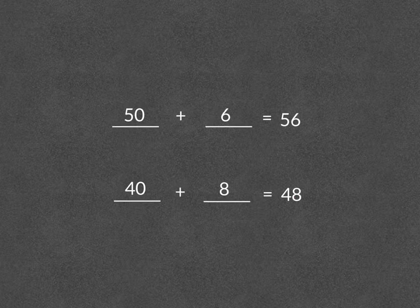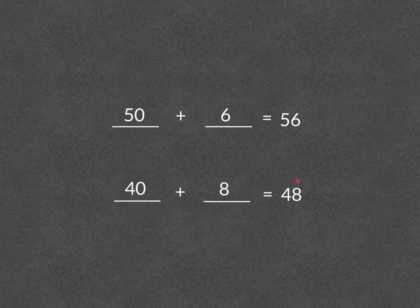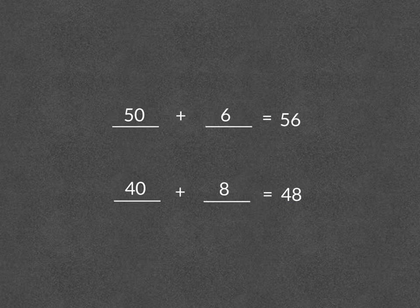In 48, there are 8 1's because the 8 is in the 1's place, and there are 4 10's because the 4 is in the 10's place. So the 40 plus the 8 equals 48.